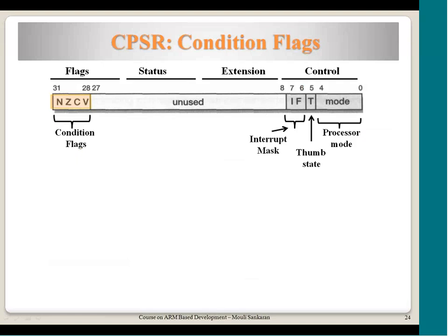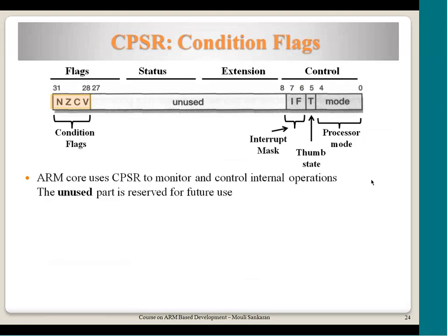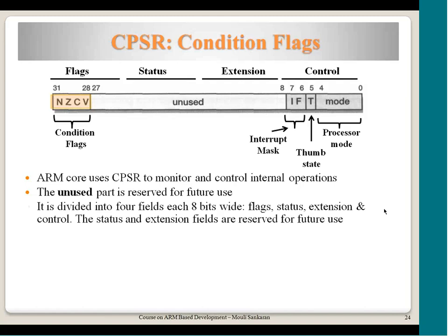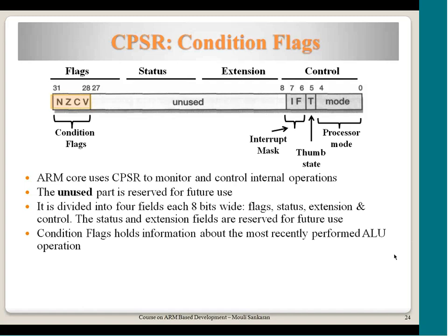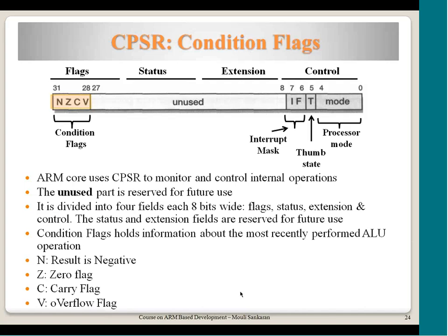Conditional flags were discussed earlier — this is where they reside in the CPSR register. The most significant 4 bits of CPSR are mapped to N (negative), Z (zero), C (carry), and V (overflow) flags. The remaining bits are left unused or reserved for future use, such as adding new instructions or conditions in future ISA extensions. The condition flags occupy the top 4 bits of CPSR.